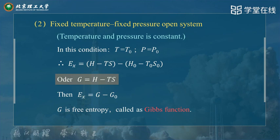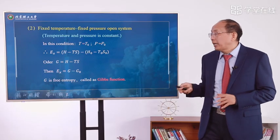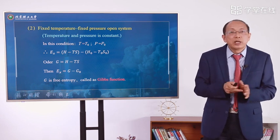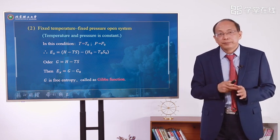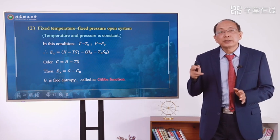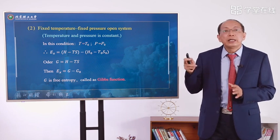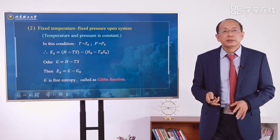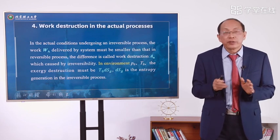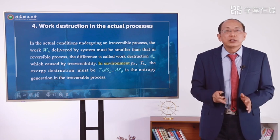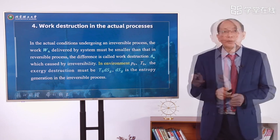We call G the Gibbs function. When we calculate the exergy, we use G minus G0, where G0 is the Gibbs function in the environment state. Section 4: work destruction in active processes.